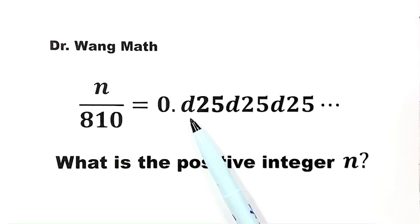Here d is a single digit number. The positive values for d are from 0 to 9. Then what is the positive integer n?